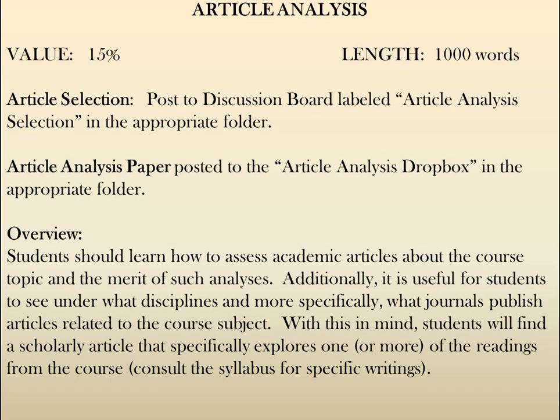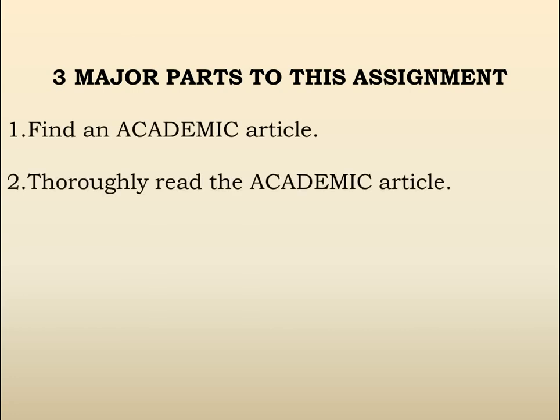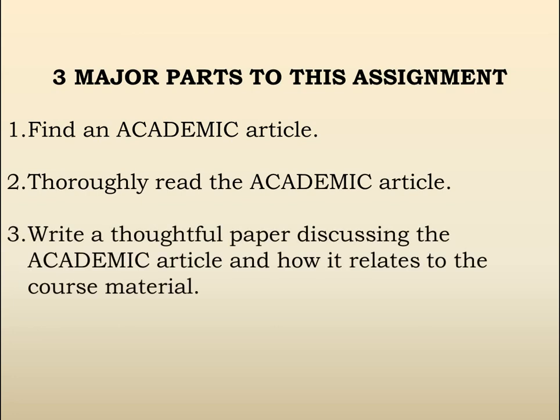Additionally, it's useful for students to see under what disciplines and more specifically what journals publish articles related to the course subject. To this end, the goal is for students to find a scholarly article that explores one or more of the readings from this course and ultimately to write about it. In performing the assignment, there are three major parts: first, find an academic article; second, thoroughly read it; and third, write a thoughtful paper discussing the article and how it relates to the course material.